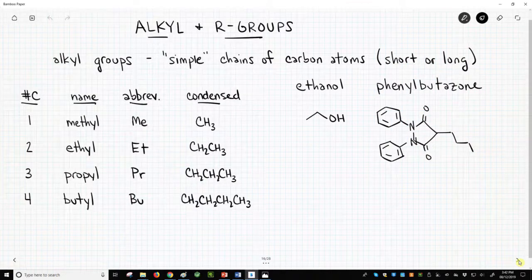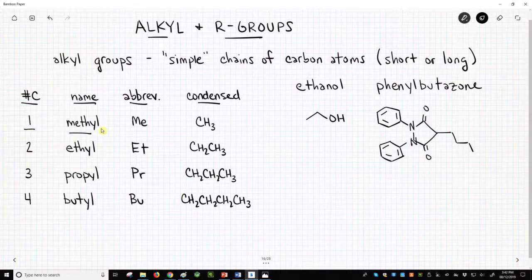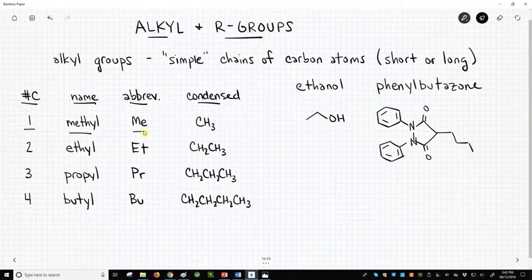We have a small table on the left-hand side of the screen. It lists alkyl groups. If you have one carbon in a chain, it is called a methyl group. It can be abbreviated with an ME. The condensed structural format equivalent is CH3. As we add carbons to make the chain longer, we get ethyl, propyl, and butyl groups.